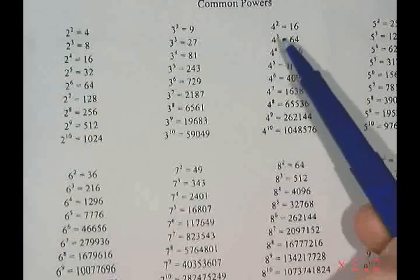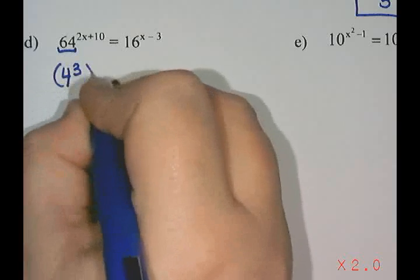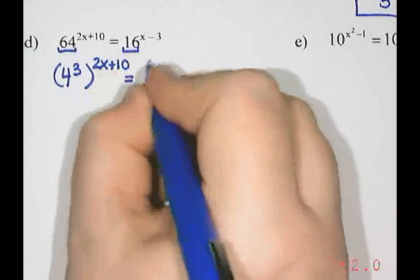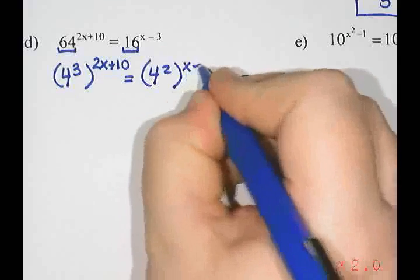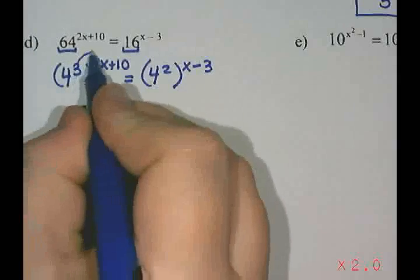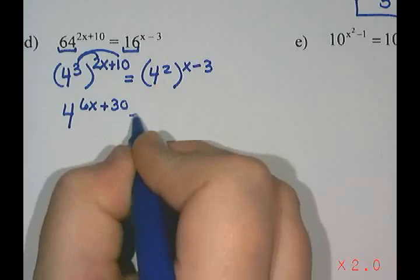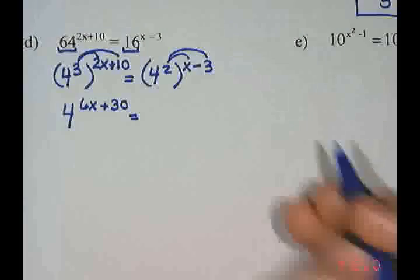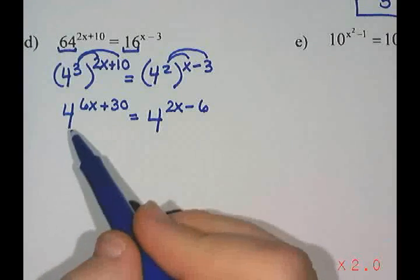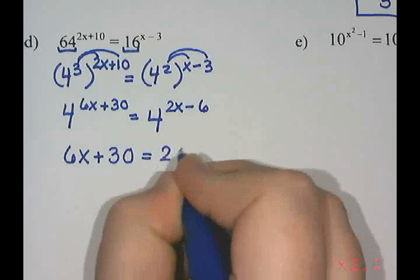So 64 is 4 to the power of 3, still raised to the 2x plus 10, and 16 is 4 to the power of 2, still raised to the power of x minus 3. I'll simplify by multiplying out the exponents: multiply 3 by both terms to get 4 to the power of 6x plus 30, and multiply 2 to get 4 to the power of 2x minus 6. Since the bases are the same, the exponents must be equal: 6x plus 30 equals 2x minus 6.